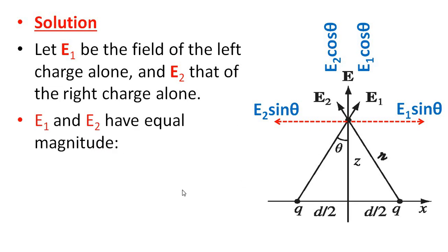We need to consider that E1 and E2 have equal magnitude. Since E1 and E2 have equal magnitude, the vertical components E1·cos theta plus E2·cos theta add together. Since E1 and E2 are the same, we can write 2·E·cos theta in general.